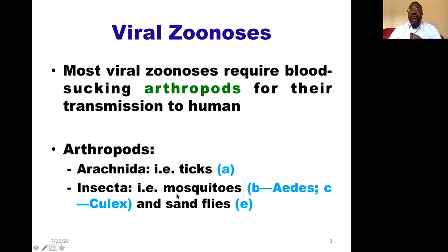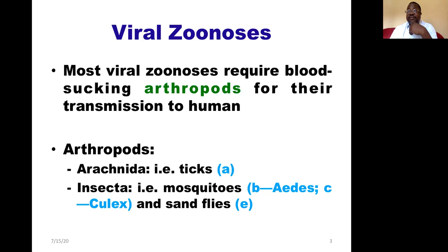Most viral zoonosis require blood-sucking arthropods, and among the arthropods we have two major categories: we have the tick on one side and we have mosquitoes and sandflies in another group, because mosquitoes and sandflies are what we call Insecta.